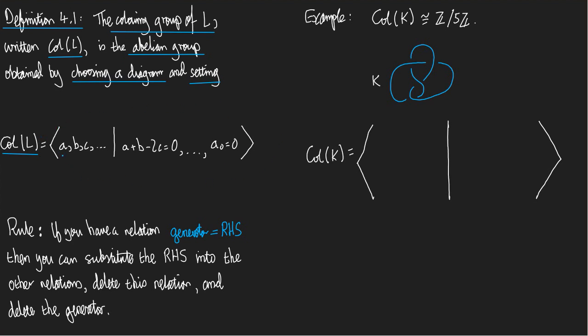It's the abelian group generated by A, B, C and so on, subject to the relations—let me start again. It's the abelian group generated by A, B, C and so on, subject to the relations A plus B minus 2C equals 0, and so on, and a single relation A0 equals 0. Now, what else is going on?